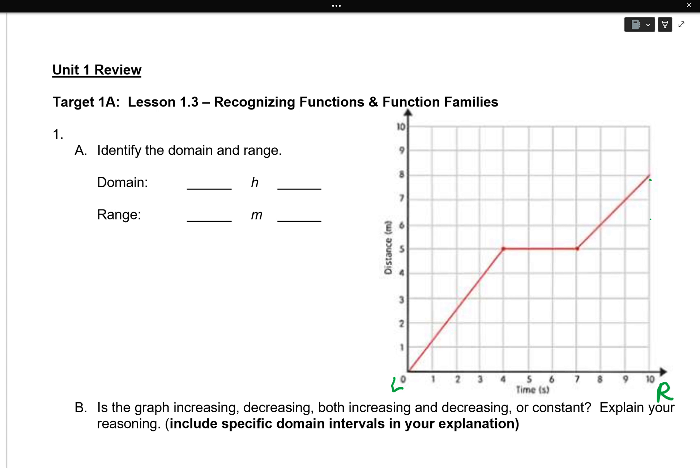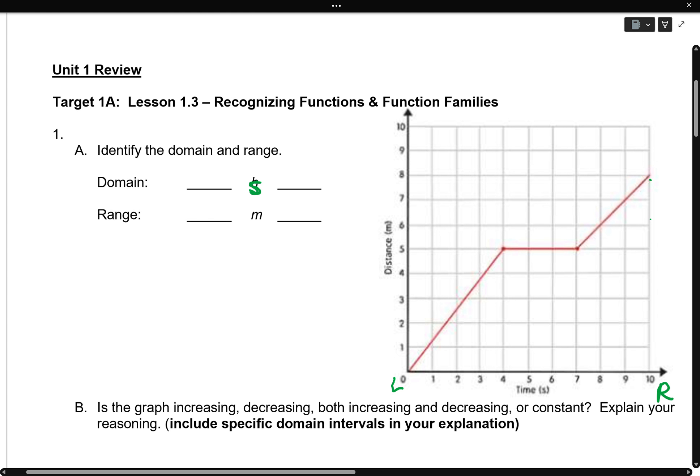Now, our domain, our domain is our set of X's. In this case, I did mean to write S for seconds, but I wrote H for hours by accident. But regardless, our domain goes left to right. Now it looks like on the left side, I start out at 0, and on the right, I end at 10. And I know I end at 10 because there it is, I'm drawing little dots.